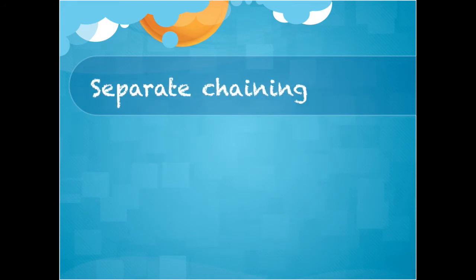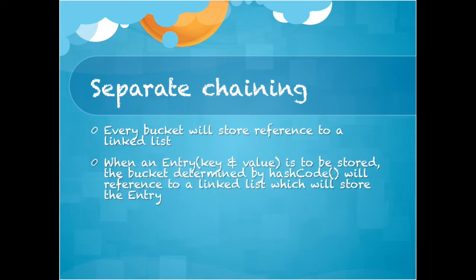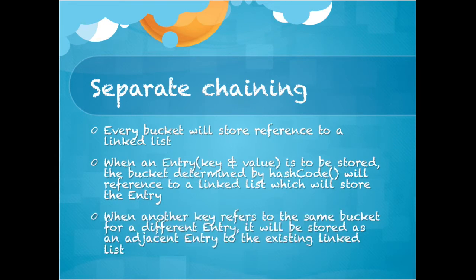What is separate chaining collision resolution? In separate chaining collision resolution mechanism, every bucket will store a reference to a linked list. When an entry key and value is to be stored, the bucket determined by hash code will reference a linked list which will store the entry. When another key refers to the same bucket for a different entry, it will be stored as an adjacent entry to the existing linked list.